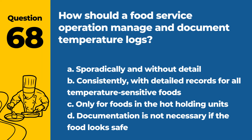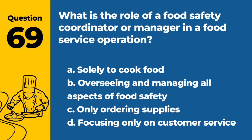Question 68. How should a food service operation manage and document temperature logs? a. Sporadically and without detail. b. Consistently with detailed records for all temperature-sensitive foods. c. Only for foods in the hot holding units. d. Documentation is not necessary if the food looks safe. Answer: b. Consistently with detailed records for all temperature-sensitive foods. Accurate logs are essential for food safety monitoring.